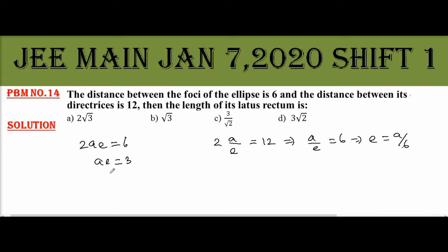So, substitute in this equation, we get a times a/6 equals 3, which implies a² equals 18. Okay, so in the ellipse, a² is 18.